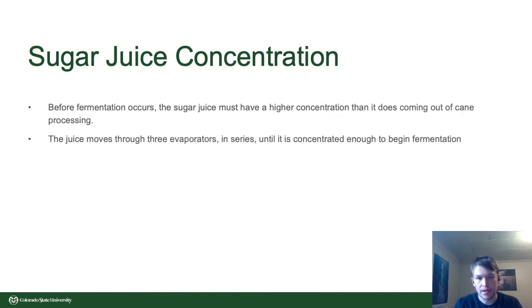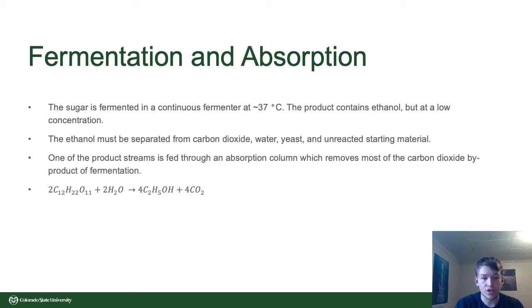Coming out of juice treatment, the juice is going to have a concentration of about 10% sucrose. That isn't high enough for fermentation, so we're going to have to evaporate it three times in series to concentrate it enough to begin fermentation. From there, the sugar juice is fed into a fermenter mixing with a yeast stream at 37 degrees Celsius. The final product streams contain ethanol, but at a very low concentration. The ethanol in those streams must be separated from carbon dioxide, water, yeast, and all unreacted starting material, because the conversion is 92%, which is pretty high, but not 100%.